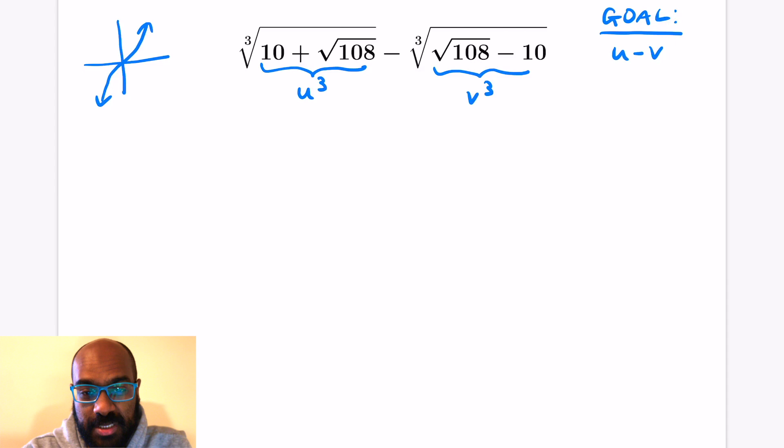There's a unique u so that u cubed is that expression 10 plus the square root of 108. There's a unique v so that v cubed is the square root of 108 minus 10. If we add these two expressions, u cubed plus v cubed will get two copies of the square root of 108.